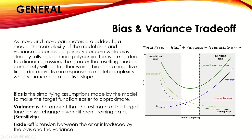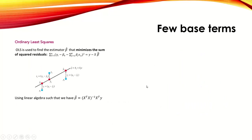When the bias is high, the model is in the underfitting zone — it learns less change in the data. When the variance is high, it is a case of overfitting — a small change affects the output and the model learns noise. The area between these two is the best optimized zone. Total error is calculated as: bias² + variance + irreducible error. This chart of model complexity versus error is very useful to understand the bias-variance trade-off.